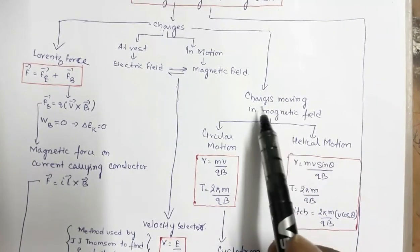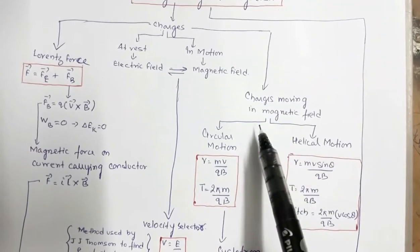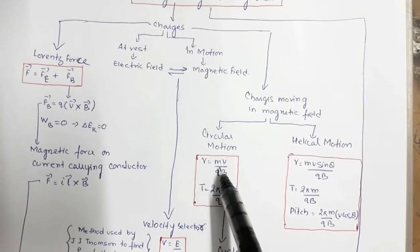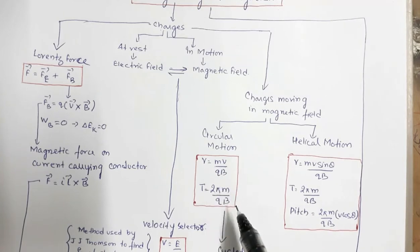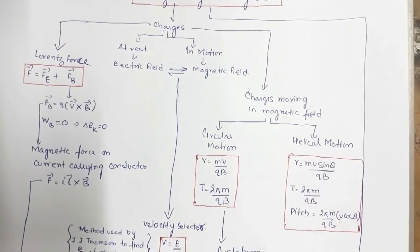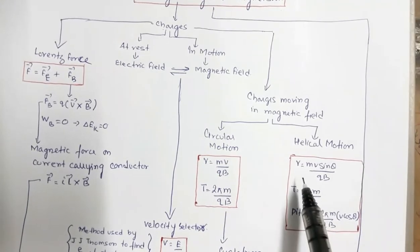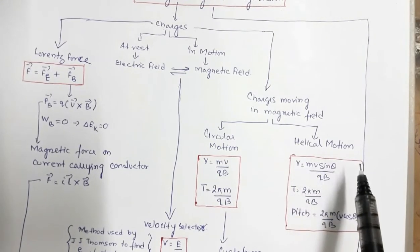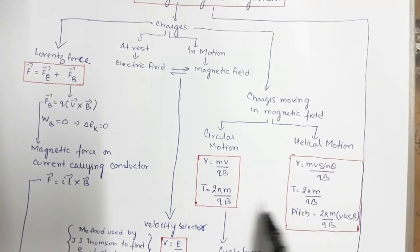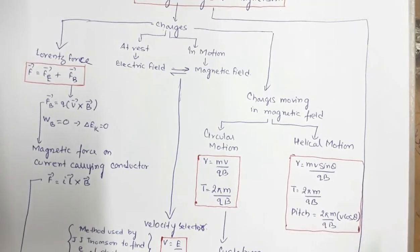If charges are moving in a transverse magnetic field, the result is circular motion. The radius of the circular path is r = MV/QB, where M is mass, V is velocity, Q is charge, and B is the field strength. The time period of revolution is T = 2πM/QB. If the particle enters at an angle other than 90°, the motion is helical, with radius MV sinθ/QB, the same time period, and a pitch of (2πM/QB) × V cosθ.